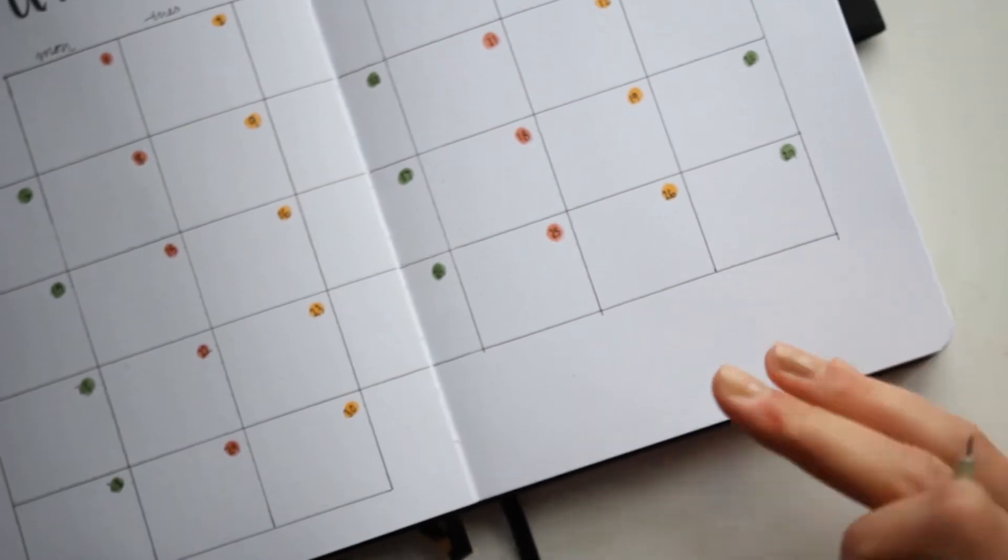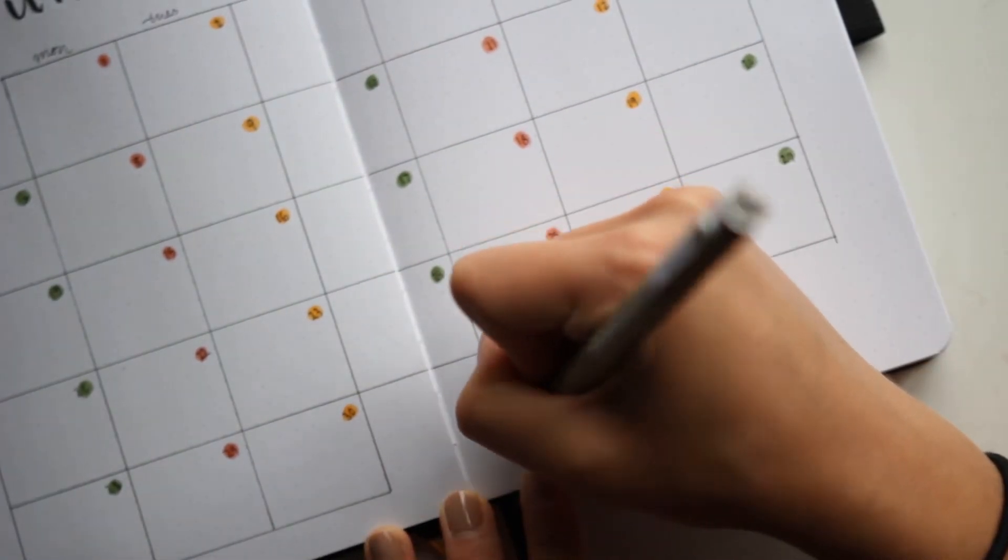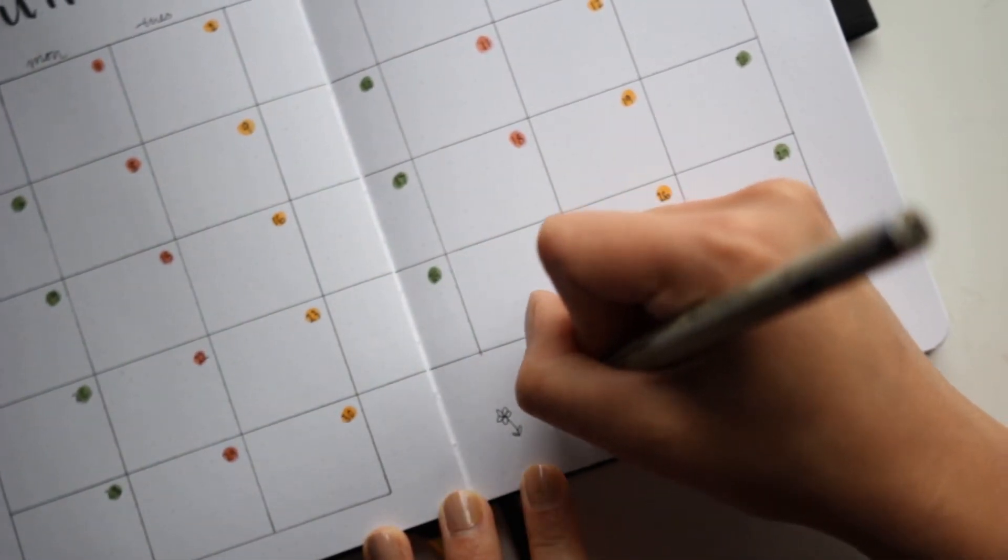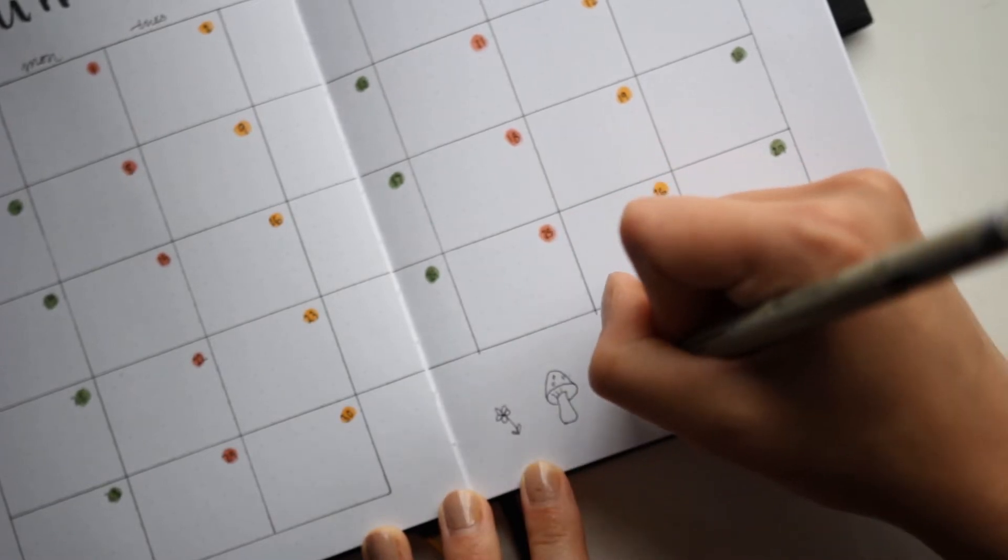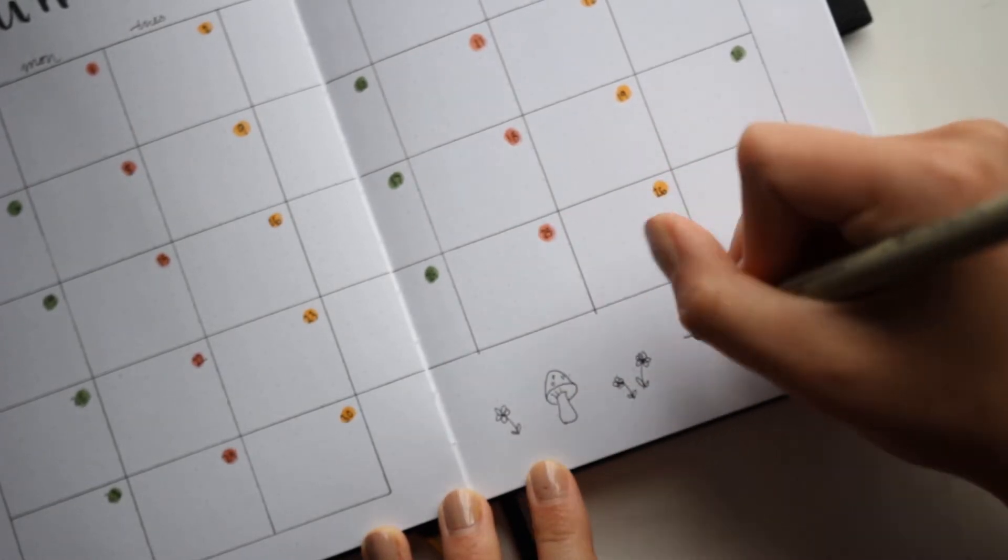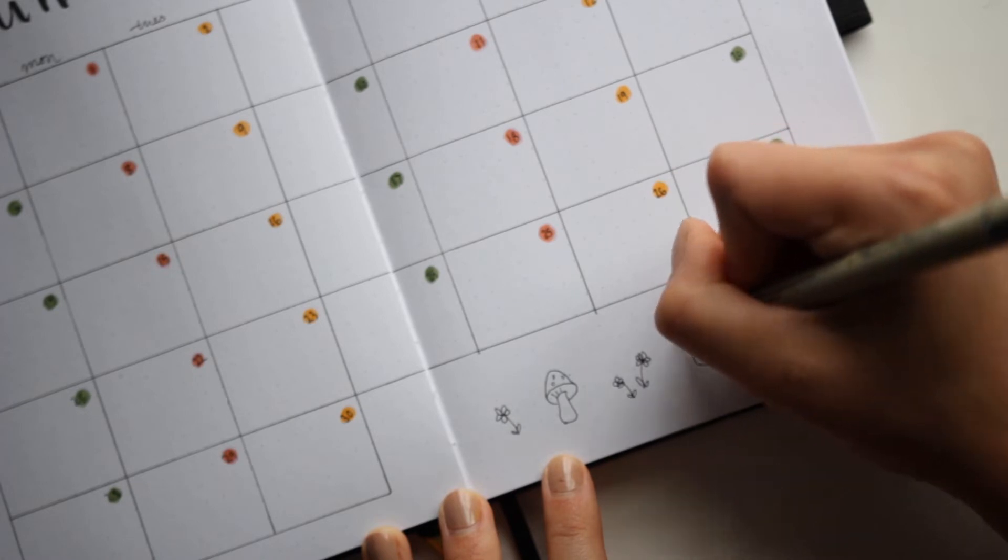If you are gonna make your own bullet journal theme, pro tip is just choose maybe four colors that you're gonna use for the month and stick with those. It looks really cool.